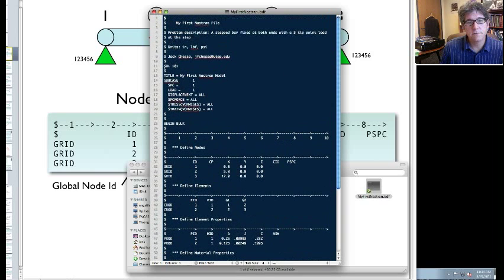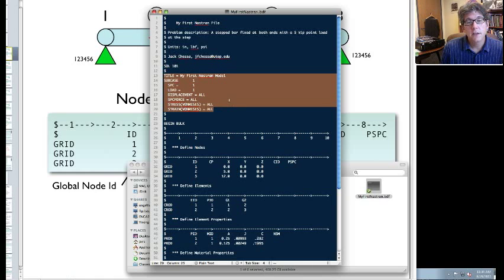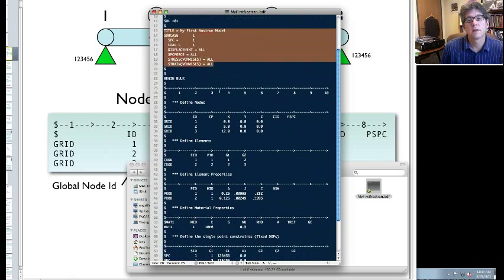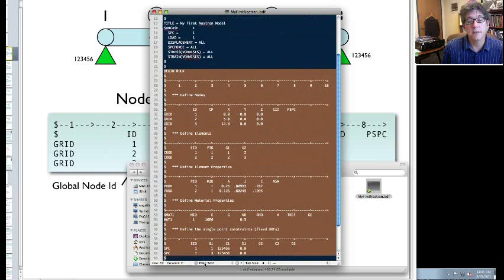There's three main sections. The first section is very short. This is the executive control section. This basically, for our purposes, just tells you what solver you're using. And we'll mostly be using solver 101. The next section gives you the load cases.